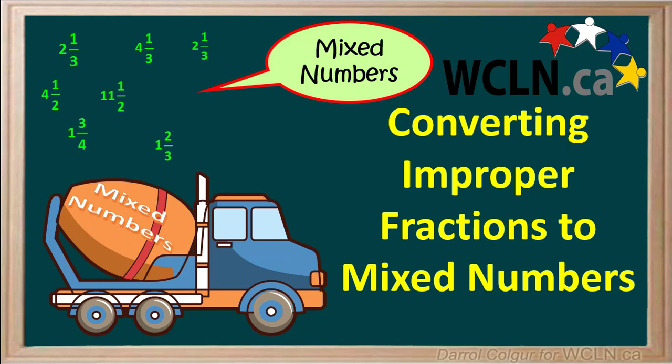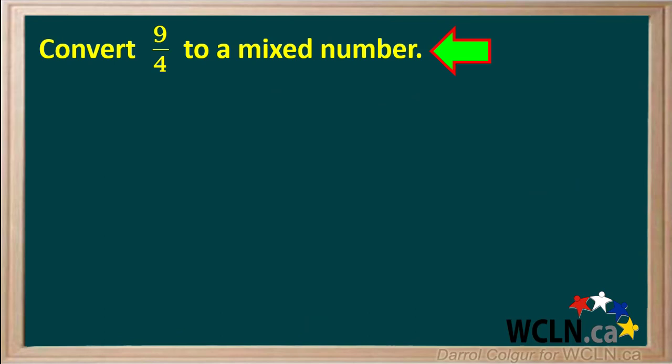We'll start with an example. We want to convert the improper fraction 9 over 4 to a mixed number. We start by dividing the numerator 9 by the denominator 4.